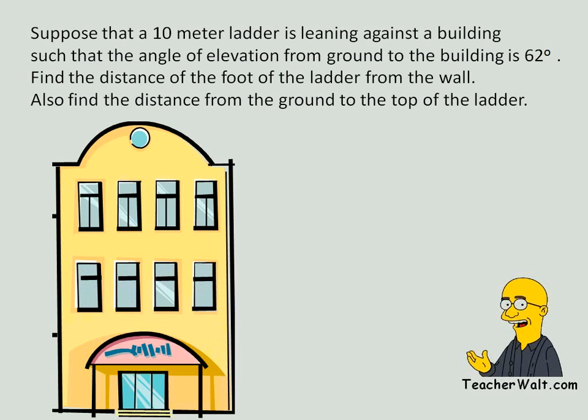So let's do that. We've got the building here. We've got a ladder. Now once we draw that, we label the given parts. We know that the hypotenuse is 10 meters. That's the length of the ladder. We also know that the angle of elevation is 62 degrees.